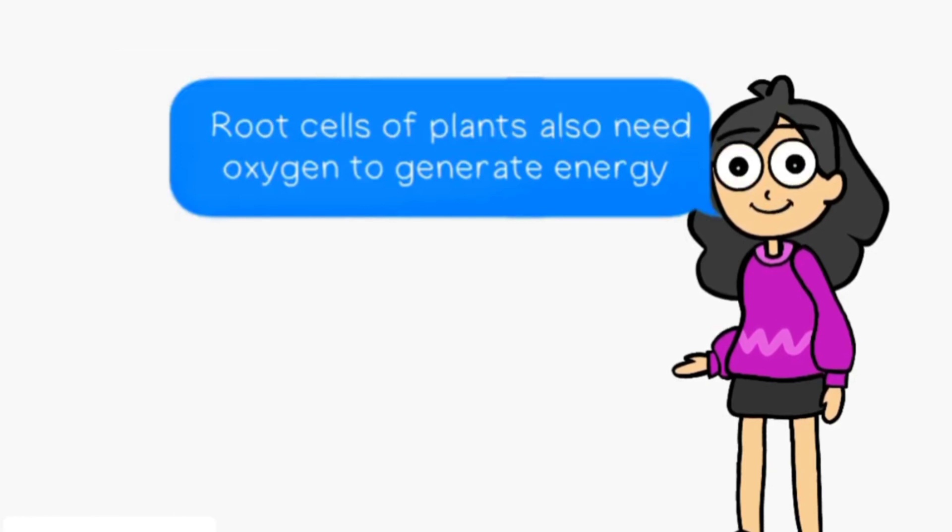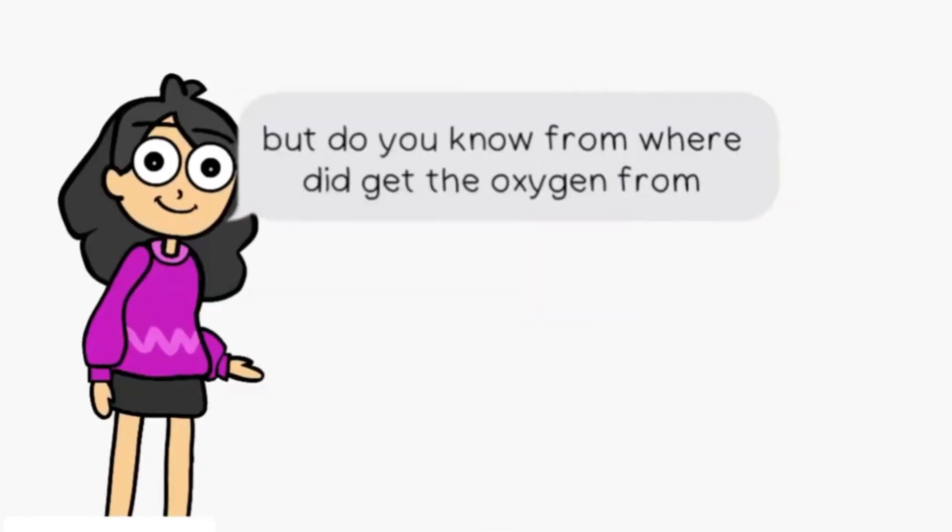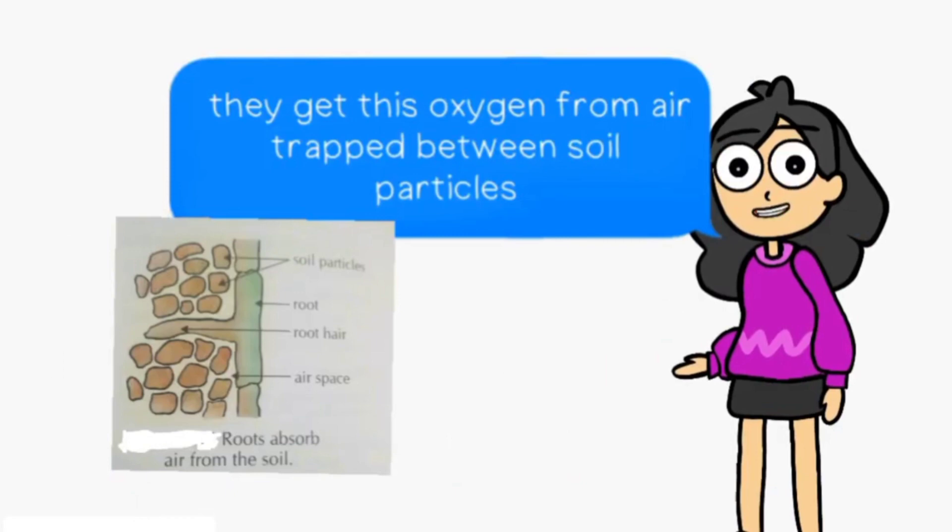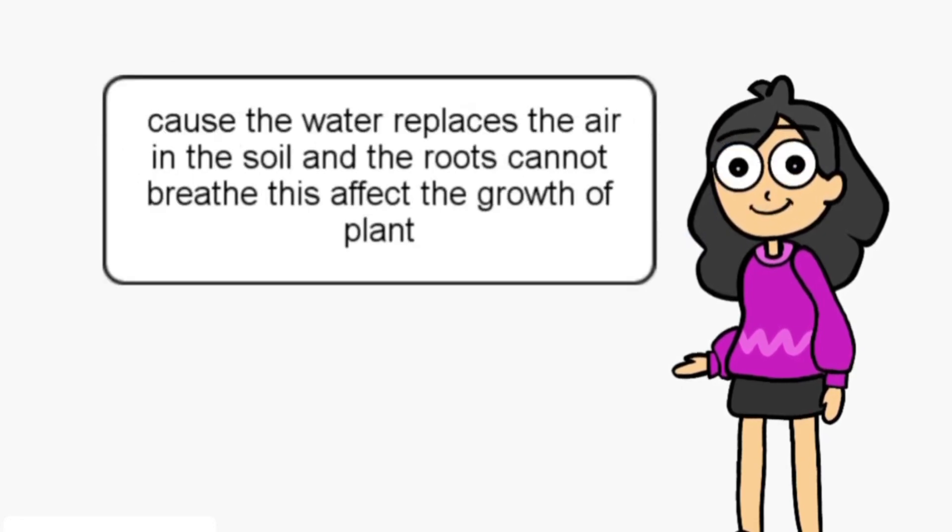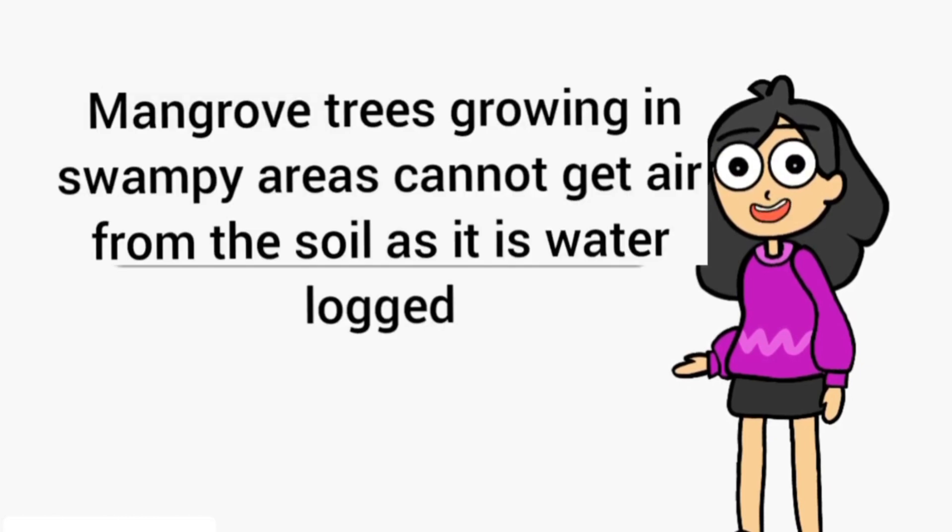Root cells of plants also need oxygen to generate energy. The roots of plants get oxygen from air trapped between the soil particles. That is the reason why we should not over water potted plants, because the water replaces the air in the soil and the roots cannot breathe. This affects the growth of plants.